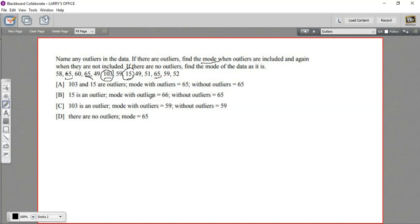Well, let's see, there are two 59s in there, but I don't think there's anything else that has three. So it looks like the mode is 65, and it doesn't matter if I exclude or include the outliers, that mode is going to remain 65. So in this case, 103 and 15 are outliers, and the mode remains 65 with or without. That's a little bit of work with outliers.